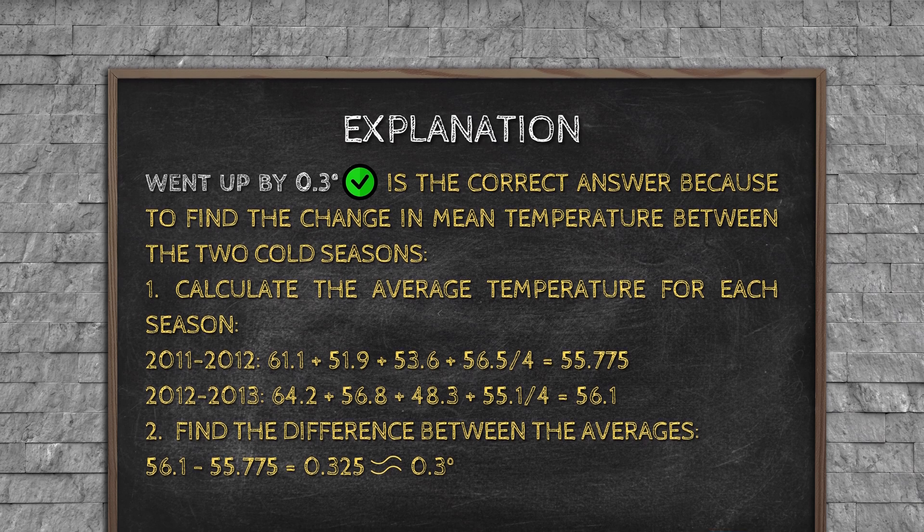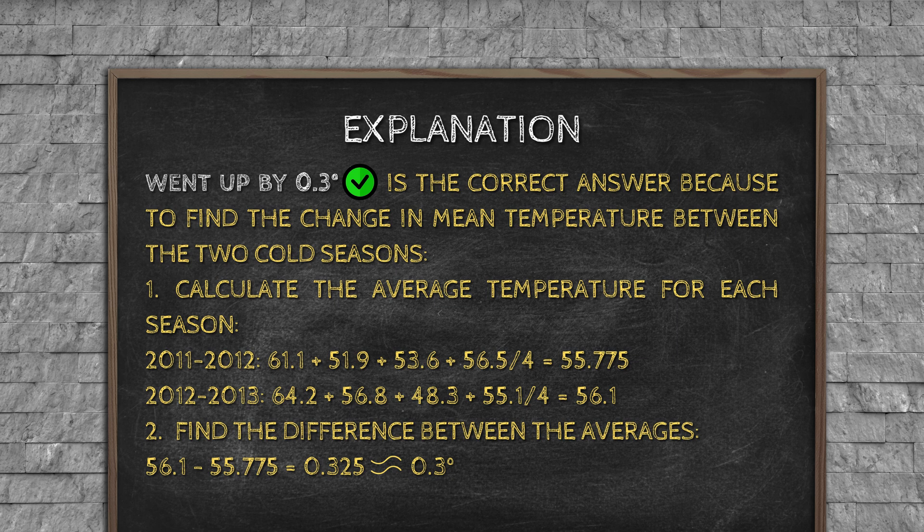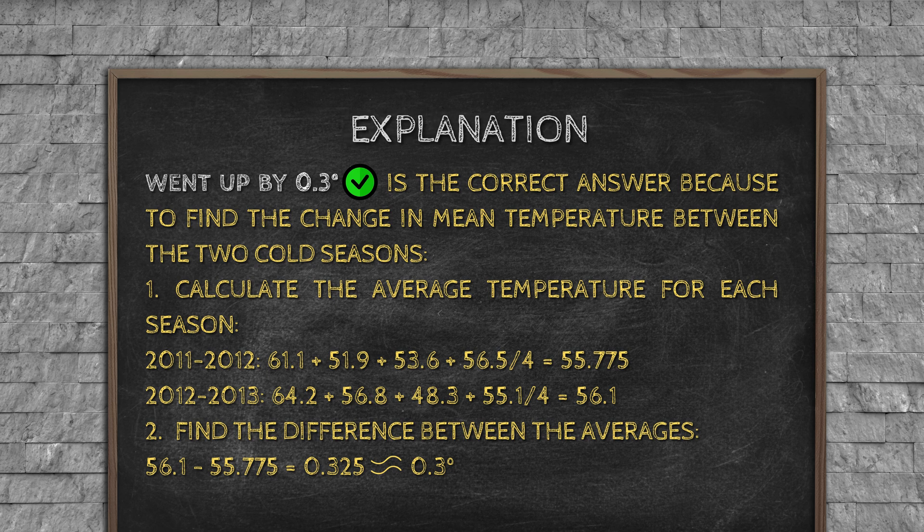Explanation: went up by 0.3 degree is the correct answer because, to find the change in mean temperature between the two cold seasons: 1. Calculate the average temperature for each season. 2011-2012: 61 plus 51 plus 53 plus 56 divided by 4 equals 55.775. 2012-2013: 64 plus 56 plus 48 plus 55 divided by 4 equals 56.125. Find the difference between the averages: 56.125 minus 55.775 equals 0.325, approximately 0.3 degree.